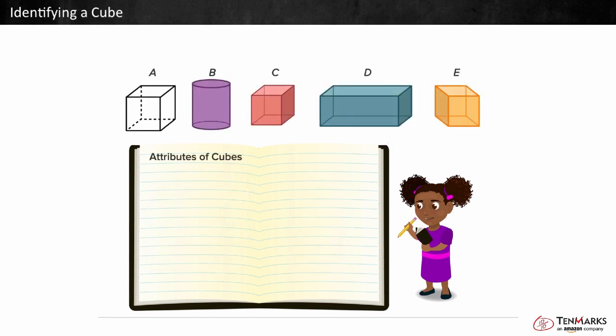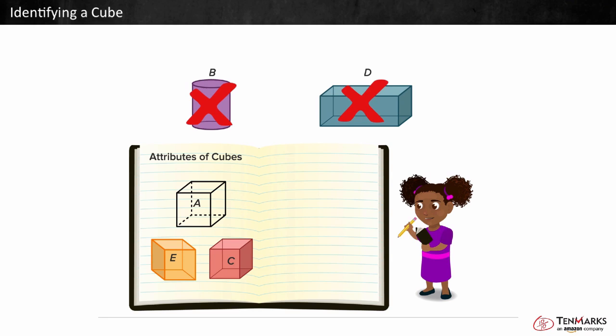Let's look at an example. Which of these shapes are cubes? Shapes A, C, and E are all cubes because they have 12 edges, 6 square faces, and 8 vertices.